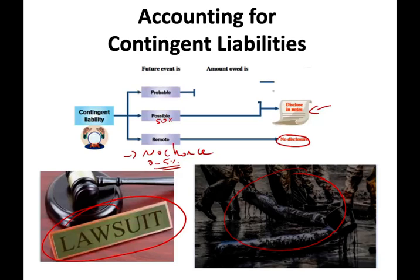Now what happens if the probability is probable? Probable means there's around a 90 percent chance — again, I'm just putting a number on the qualitative factor. At 90 percent there's a high probability you are going to lose. If that's the case, you have to determine: can you estimate the loss? You know you are going to lose but you could lose ten dollars, ten thousand, or ten million. If you cannot estimate, you disclose.